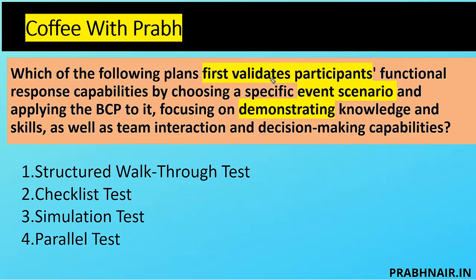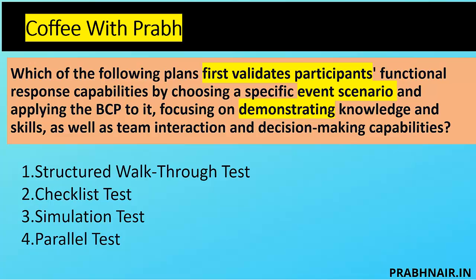Which of the following plans first validates the participants' functional response capability by choosing a specific event scenario and applying the BCP to it, focusing on demonstrating knowledge, skills, team interaction, and decision-making capability? We eliminate checklist test and structured walkthrough. Simulation is a role-based exercise — a fire drill where we see how execution happens. Parallel test happens at the alternate site. The answer is C, simulation test.